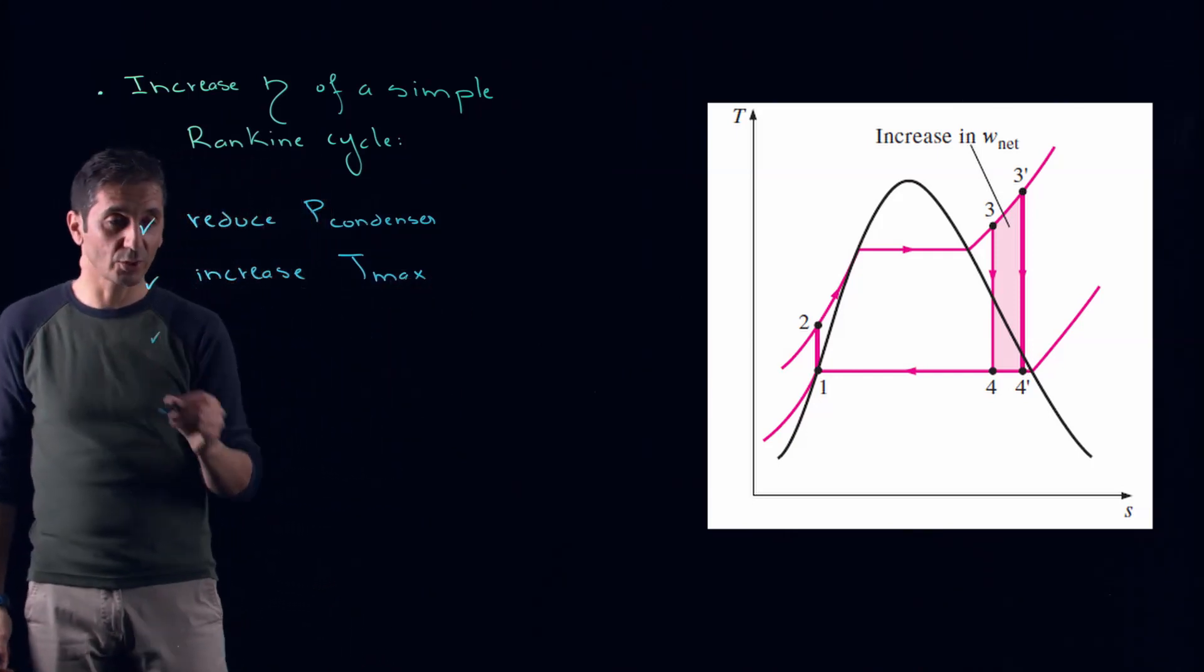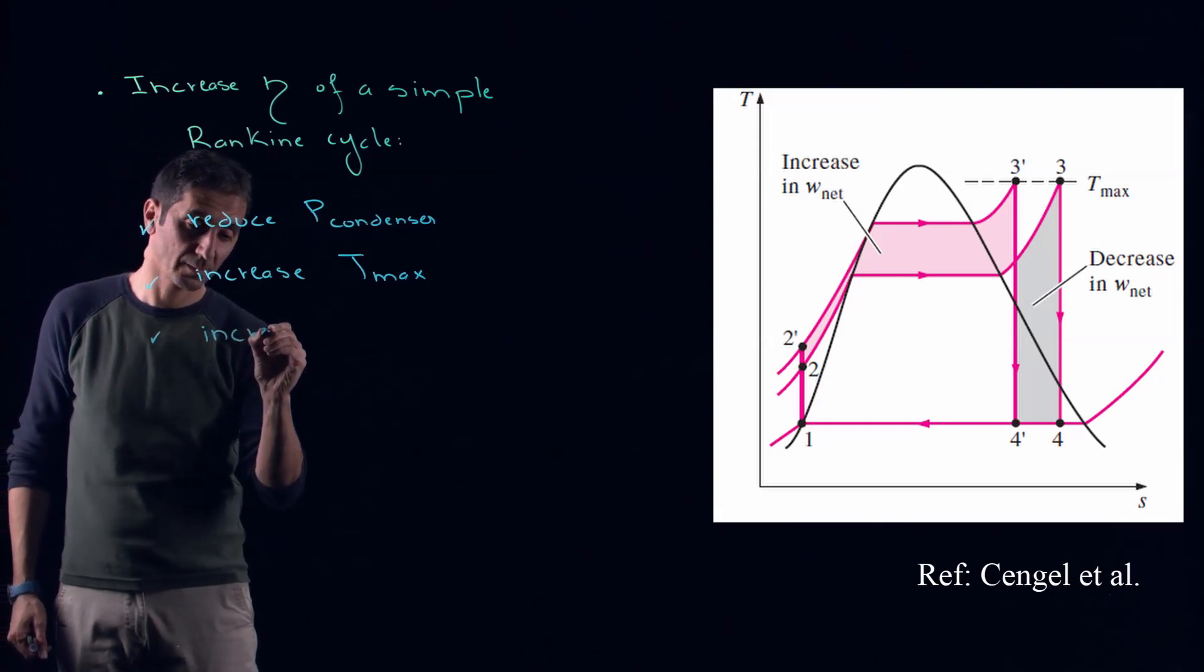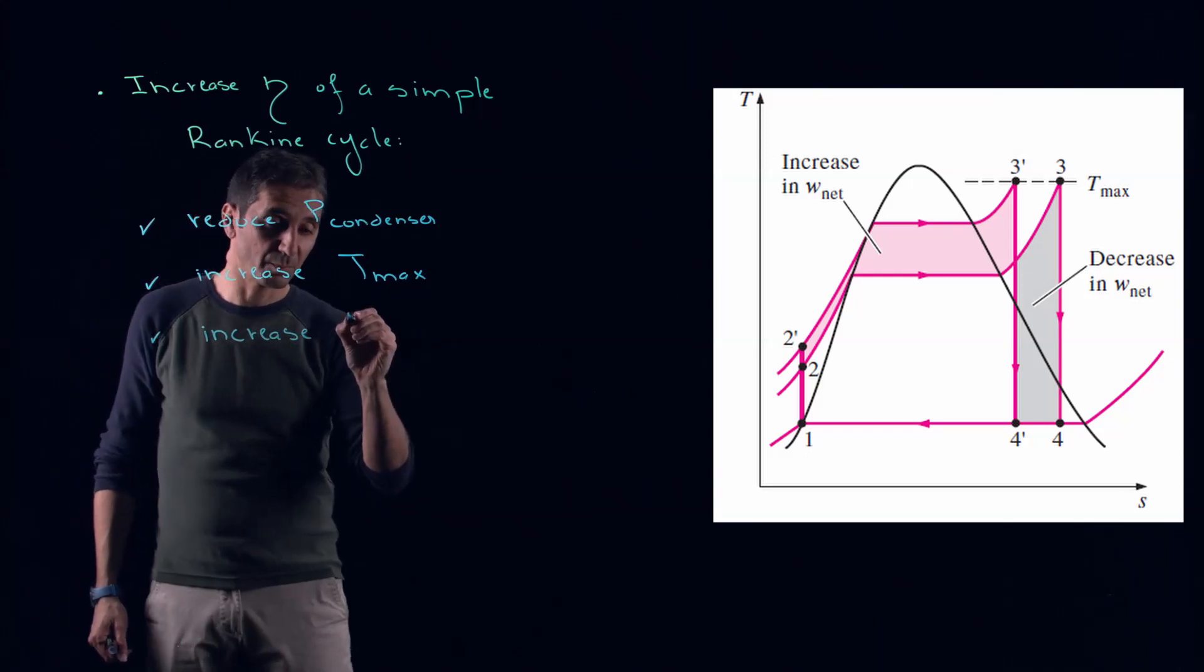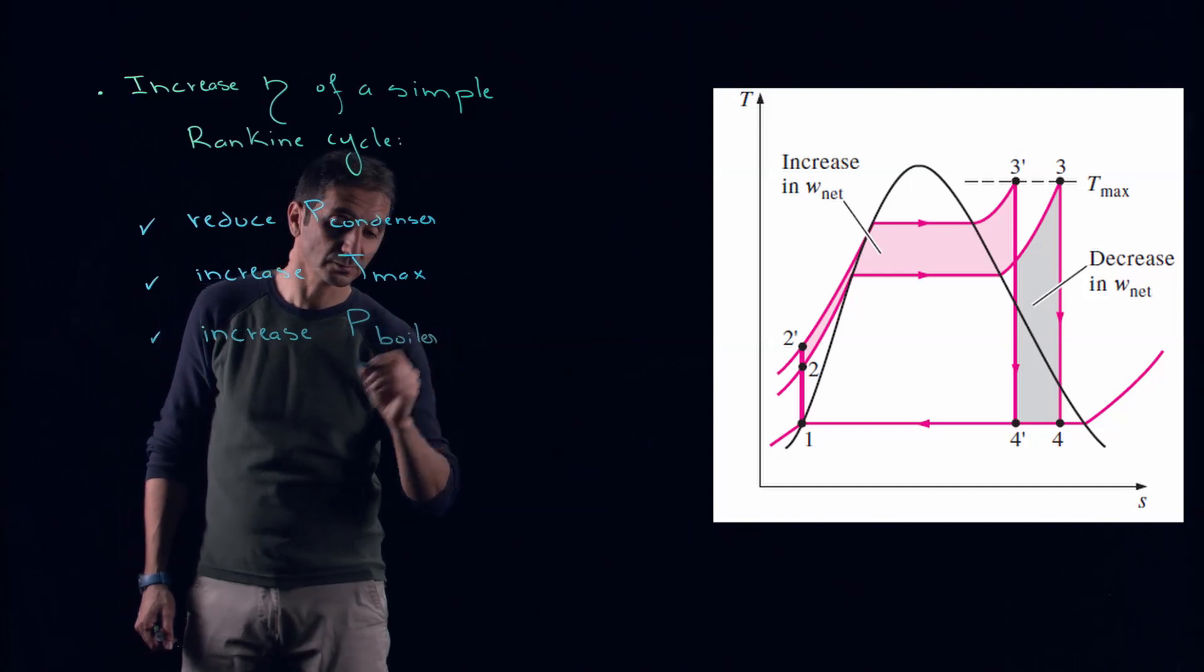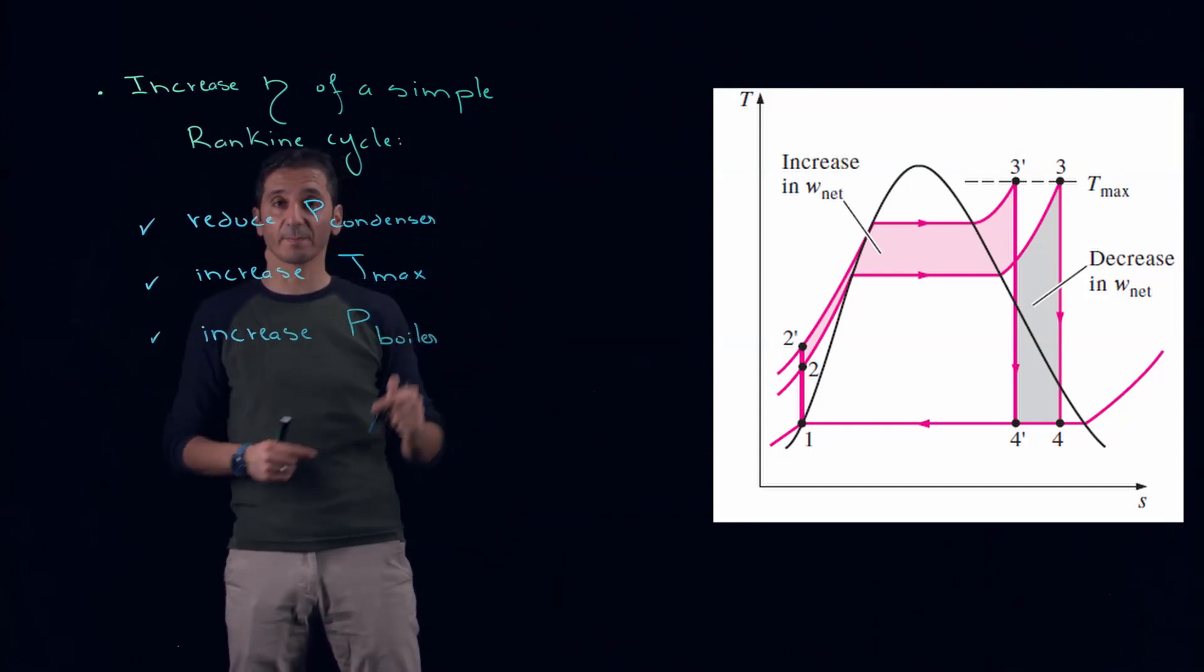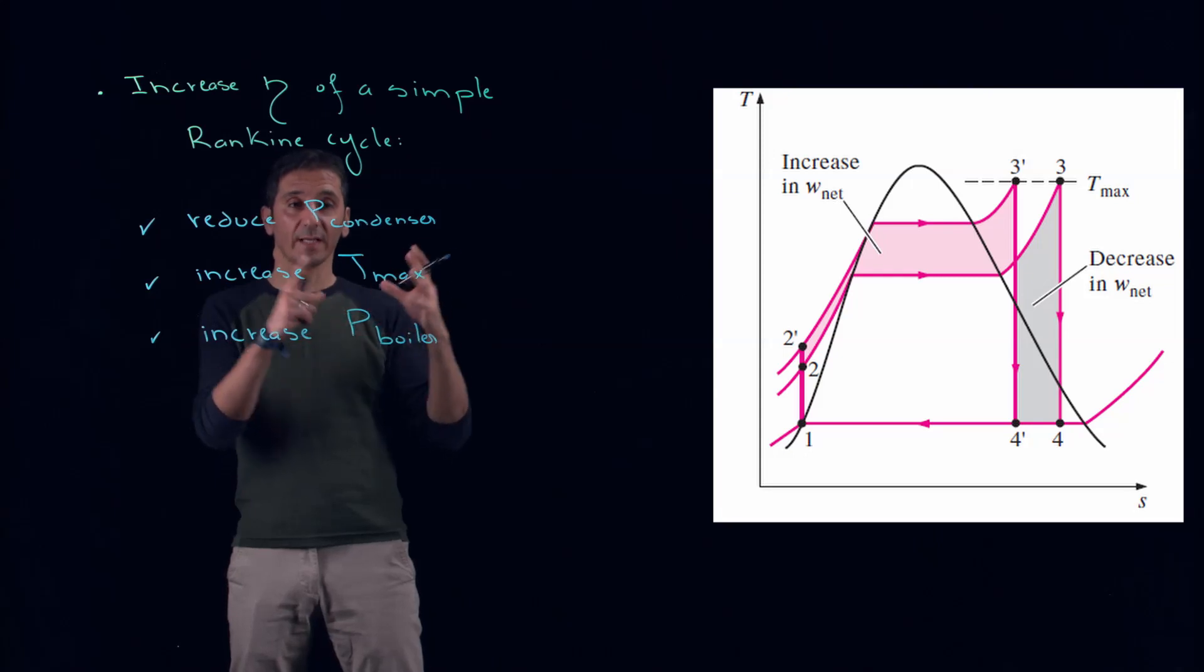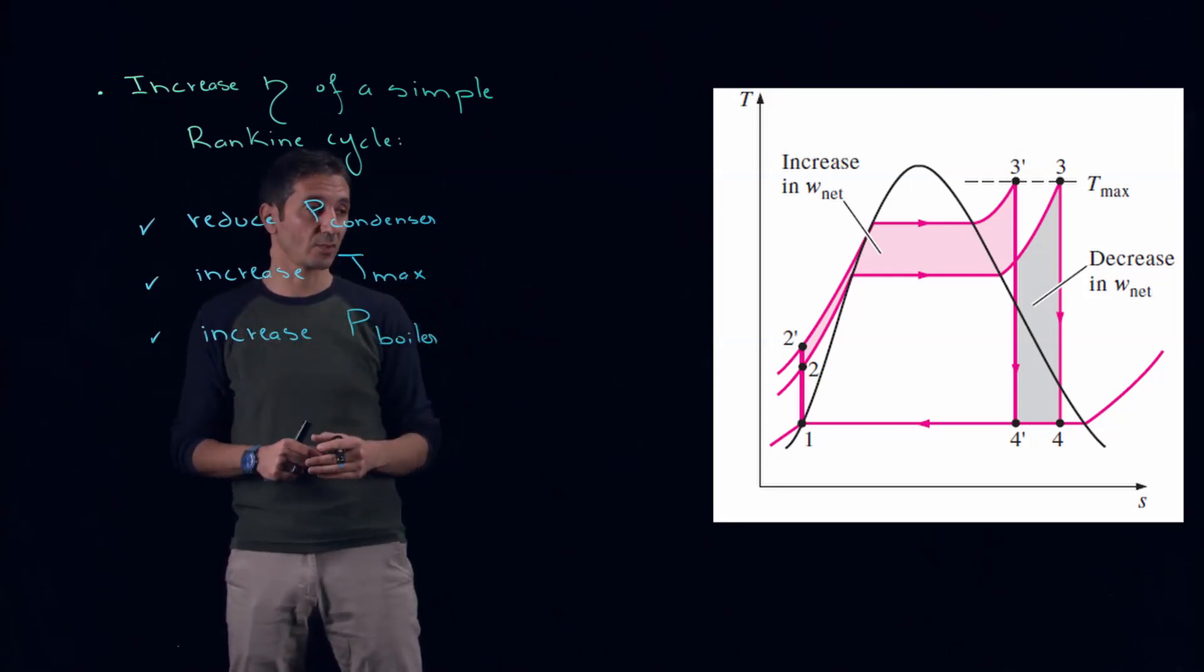The third one that we'll try is to increase the pressure in the boiler. If we increase the pressure in the boiler, the maximal pressure line moves up. Therefore, the work net will increase, which is good, but again, Qin will increase.